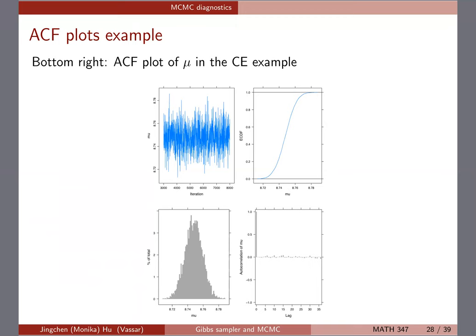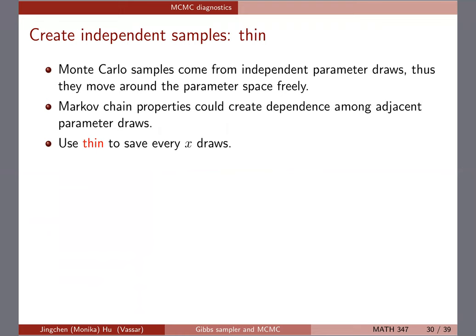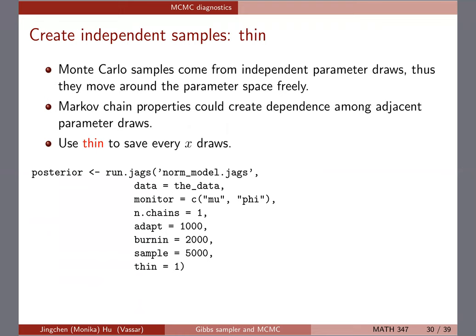In JAGS, there is a thinning option in the run.jags command. For our case, since the effective sample size is already near 5,000, thinning of 1 is fine. But if you want to save every 20th or 30th draw, you set that here. JAGS is flexible because it adjusts the total number of iterations automatically: if you want 5,000 final draws with thinning of 10, it will run 50,000 iterations internally and then thin for you.